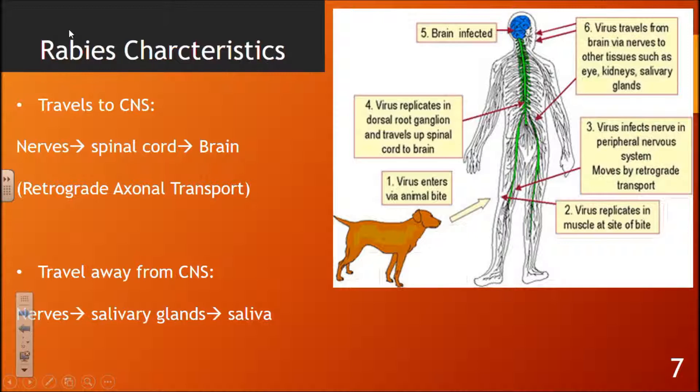How does the virus travel away from the central nervous system to the salivary gland cells? It transports using nerves again, travels to the salivary glands, and is then excreted through the saliva. That's all you need to know for this section.